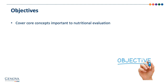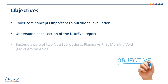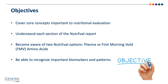We'll be covering several objectives in this video. First, we'll cover core concepts important to nutritional evaluation. We'll understand each section of the NutriVal report, including the results overview pages and the organic acids, amino acids, essential metabolic fatty acids, oxidative stress, and nutrient and toxic elements. We'll discuss how there are two NutriVal options — the plasma and the first morning void analysis — mostly relevant to the amino acid portion. Last, we'll recognize important biomarkers and patterns to assist in interpretation of our nutritional testing.